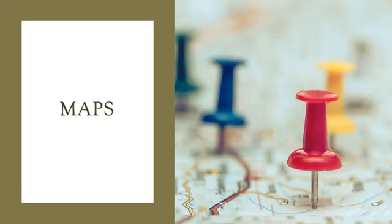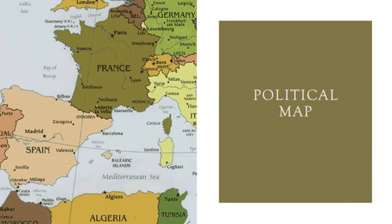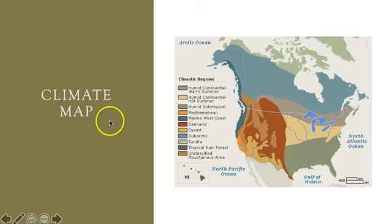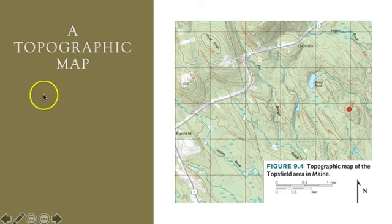Let's look at some examples of map themes. Political maps show the geographic boundaries of countries and large or important cities. Climate maps show the geographic distribution of different types of climates. Street maps are used for navigating by automobile and are probably the theme we are most familiar with. Topographic maps depict the configuration and shape of Earth's surface, done with the use of contour lines.